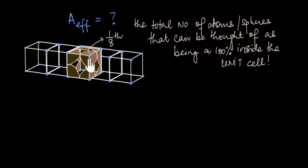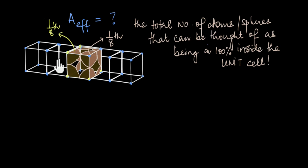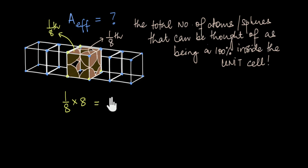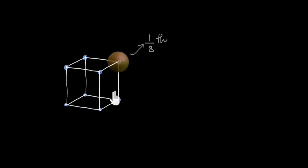Because a crystal is made of infinite unit cells in all directions, each corner atom is shared with eight other unit cells, so each contributes one-eighth. One-eighth of each sphere at a corner lies inside the unit cell, and there are eight corners, so effectively there is one whole sphere inside the unit cell. So atoms at the corners are one-eighth inside. What about atoms at other positions, say at the face center? What fraction of a face-centered atom lies inside the unit cell?